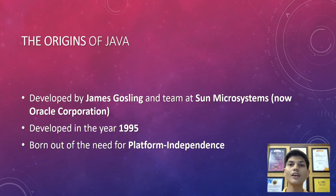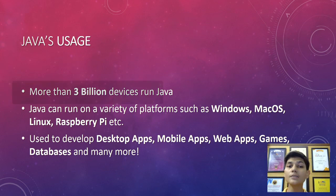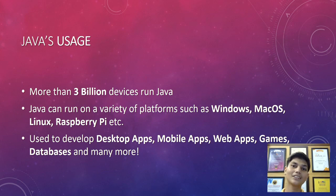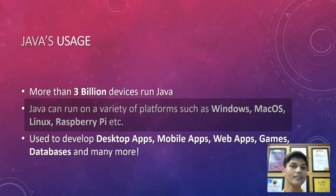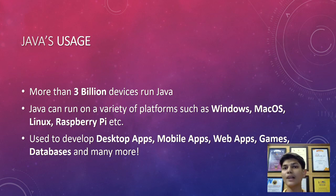Let us discuss the usage of Java — where is it being used currently? There are more than 3 billion devices that run Java. Yes, 3 billion — that is a huge number. Java, being platform independent, can run on various platforms such as Windows, Mac OS, Raspberry Pi, Linux, and a variety of Unix systems. There are multiple platforms on which Java can run, and this is the key point for Java remaining so popular till date.